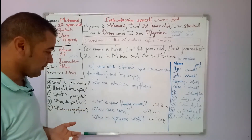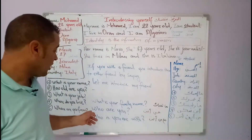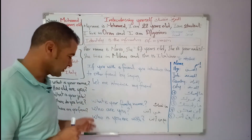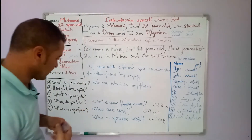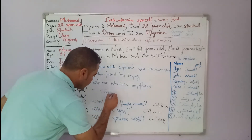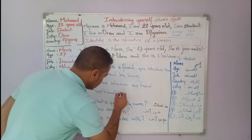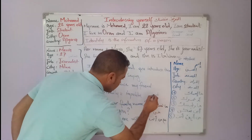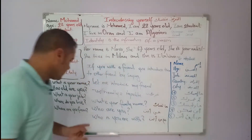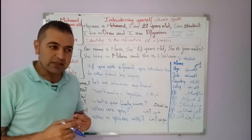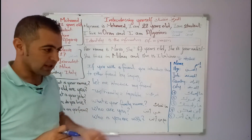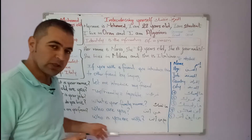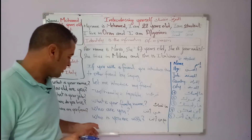We can also ask about the family name: what's your family name? Note that saying 'who are you?' is impolite and not friendly. If you are with someone and another person you know asks you about that person, they would say: who is the person that you are with?